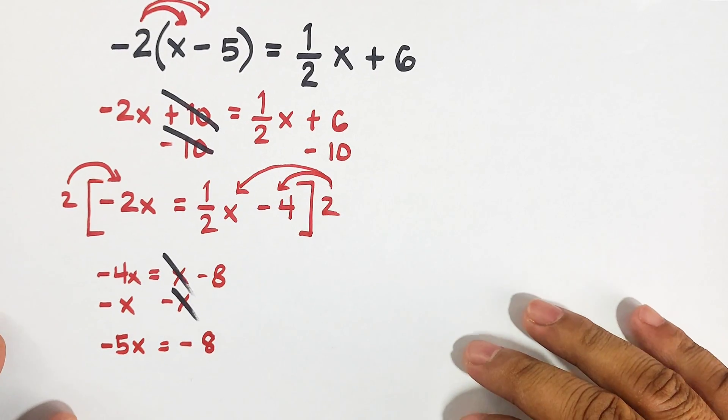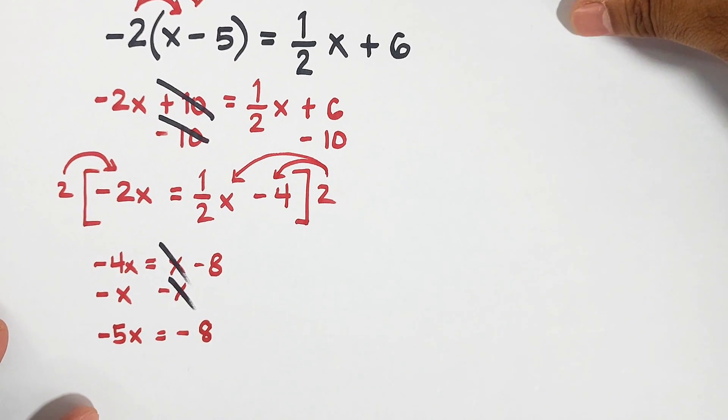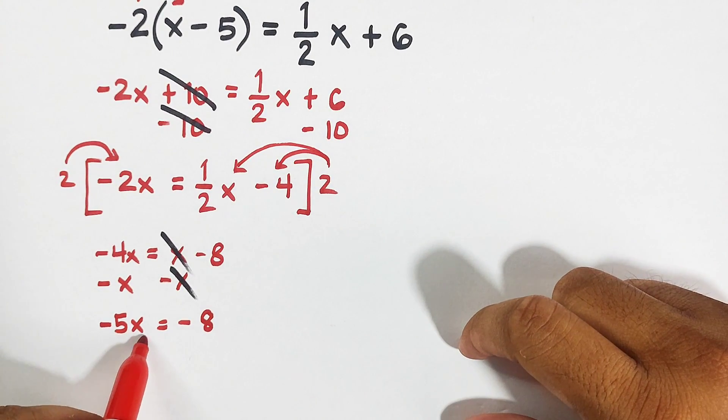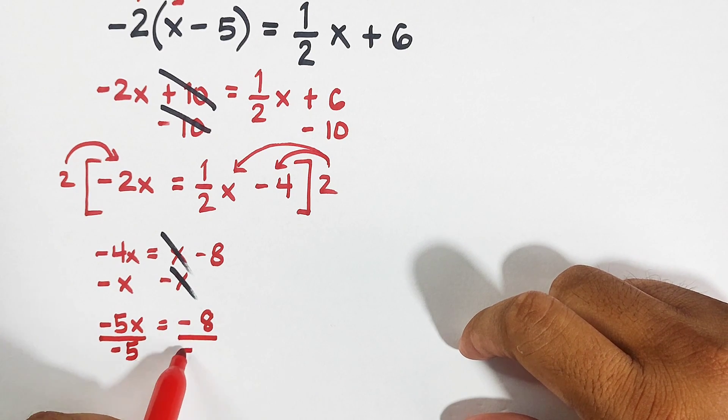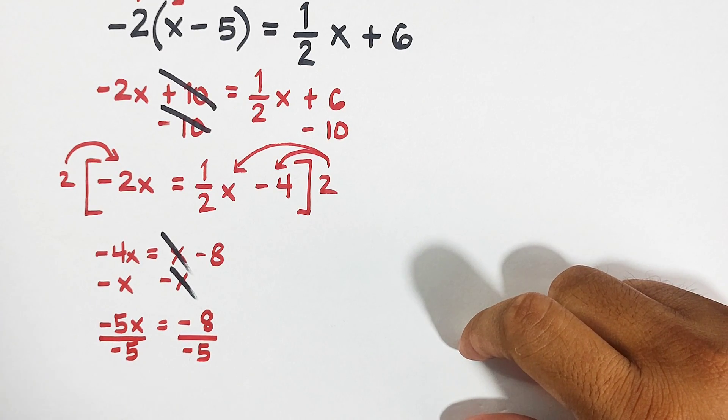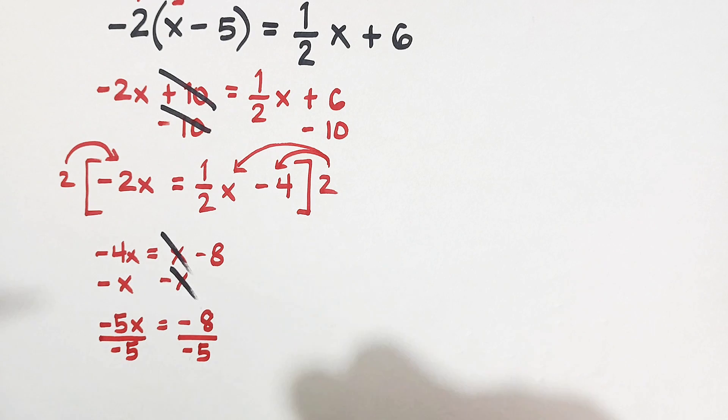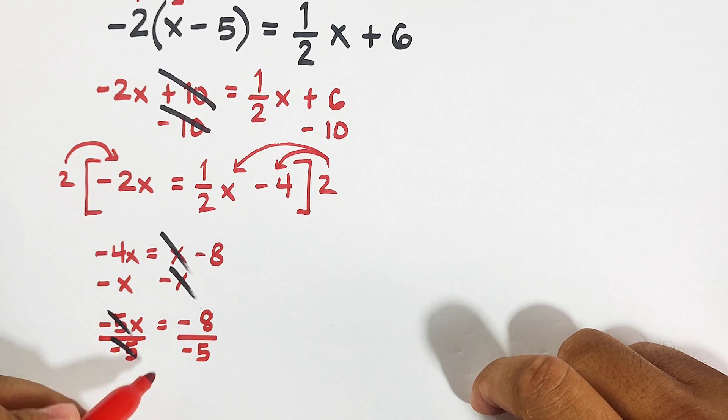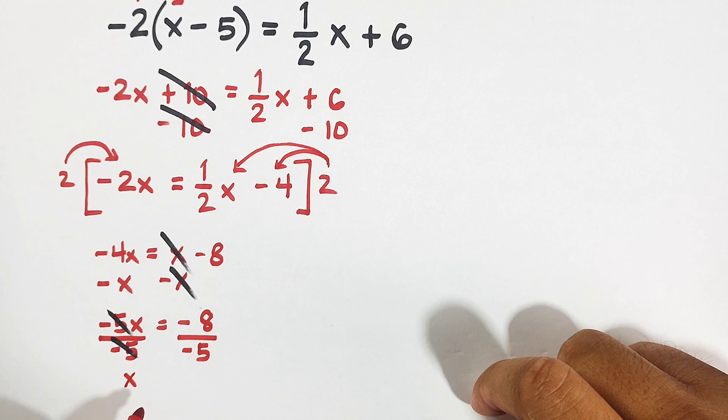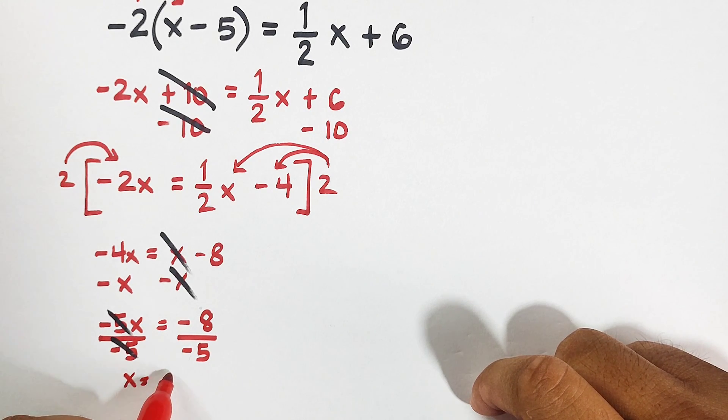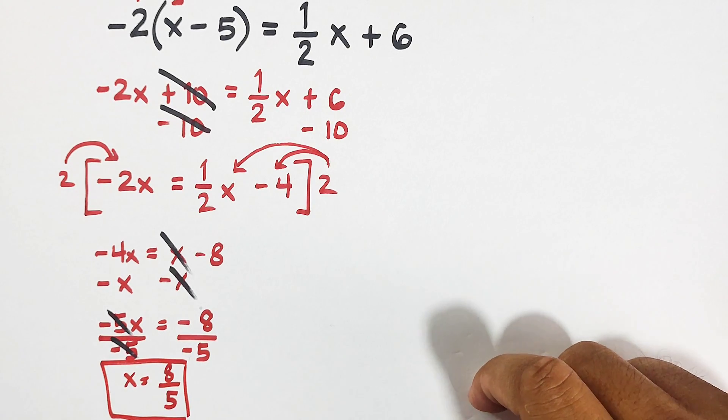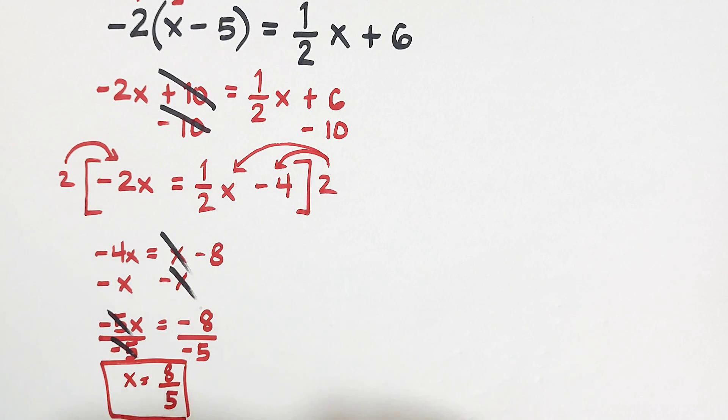So what's next here is that we will divide the whole equation by negative 5, then negative 5. Cancel this out. So what we have is x equals negative 8 over negative 5. This is simply 8 over 5. This is the answer for this given equation.